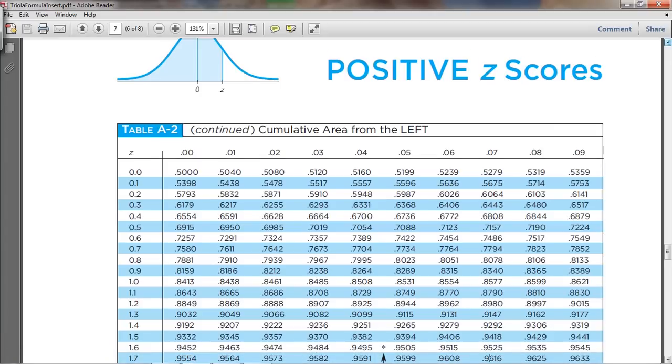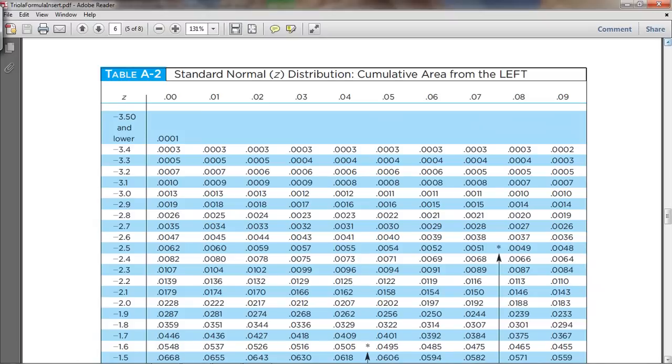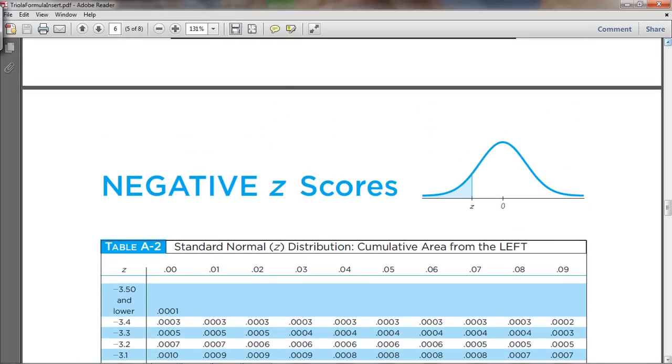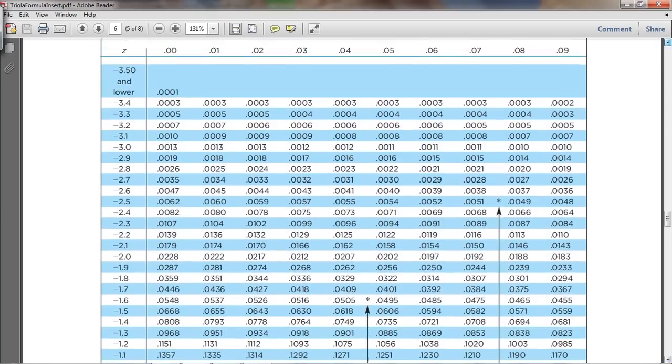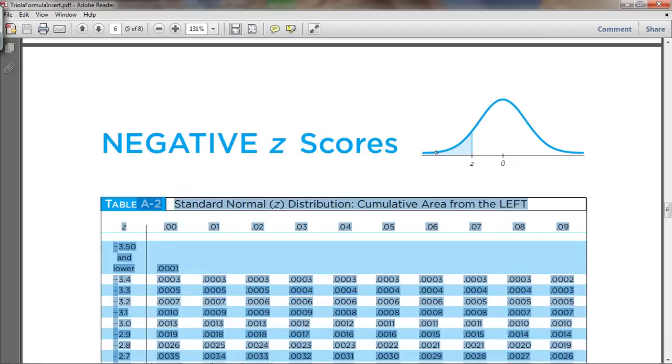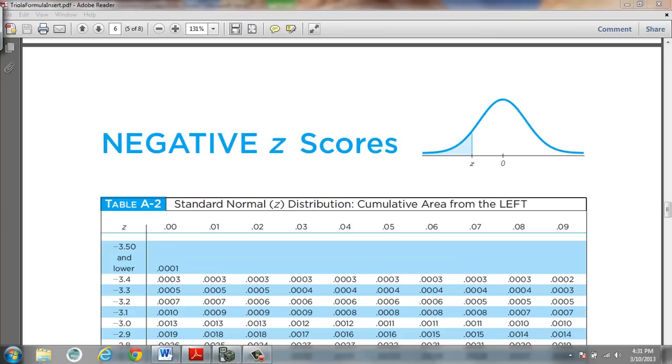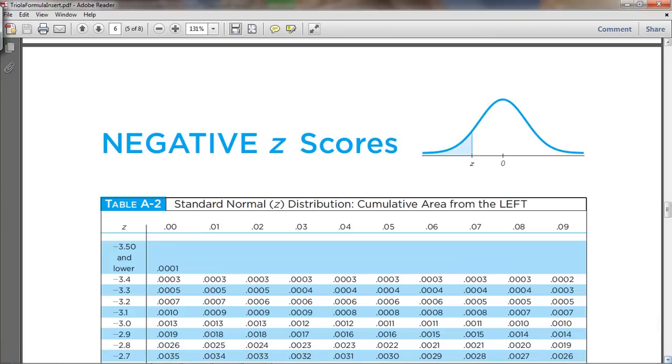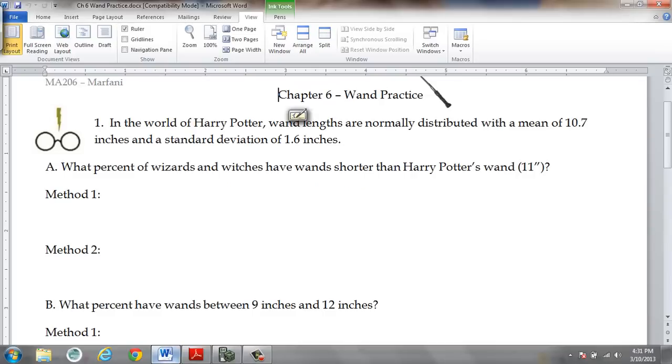So I have a copy of it here, and in the back of the book, there's two pages. It's table A2, and it's positive and negative z-scores. What this table shows you is, given the z-score, what is the area to the left of the z-score? It shows you the area below that z-score on a standard normal distribution.